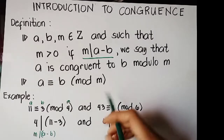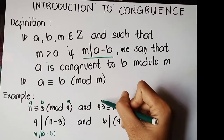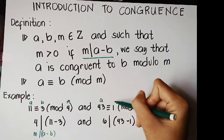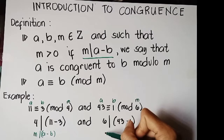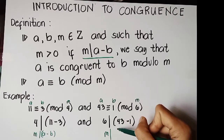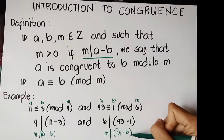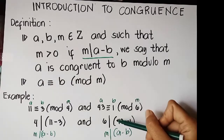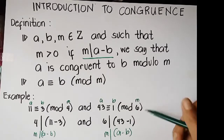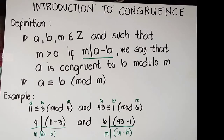So 11 minus 3, we have a, b, and m. So m divides a minus b. And for the second example, we have 6 divides 43 minus 1. So that completes the whole definition of congruences.